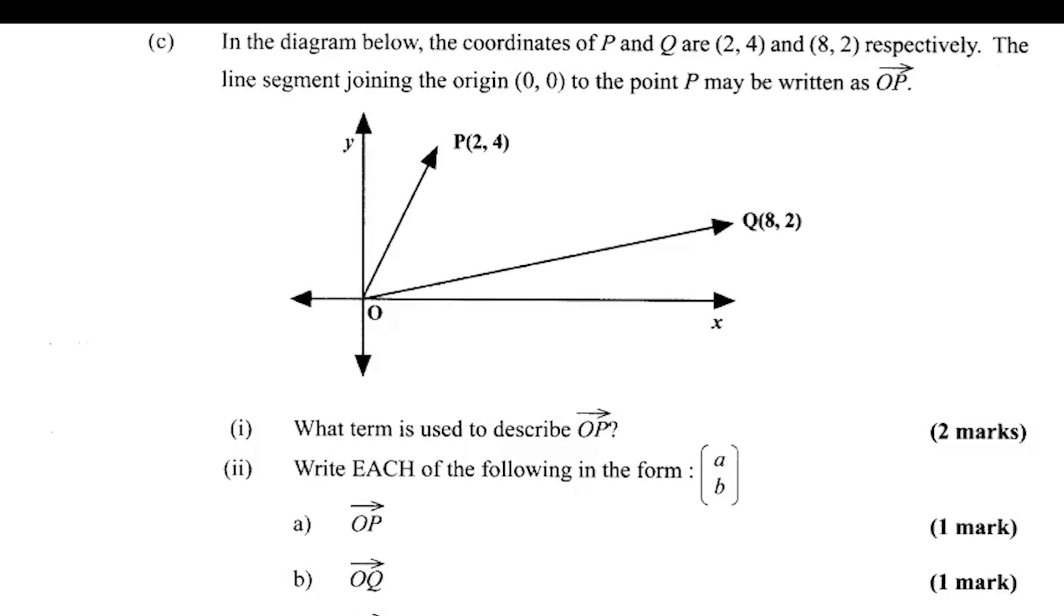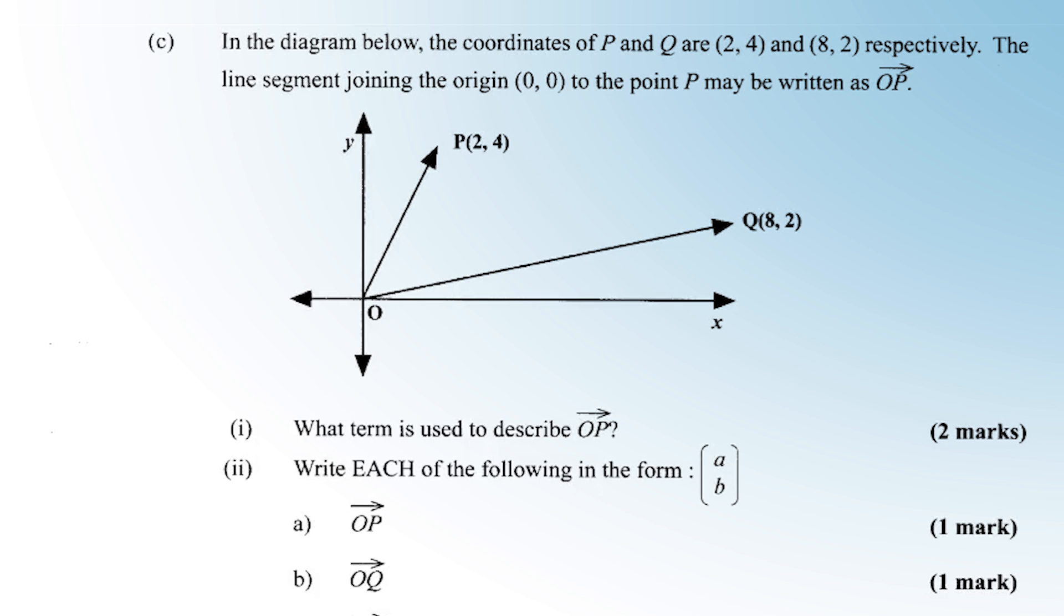Alright, so let's look at this past paper, May 2014. This is a nice one. In the diagram below, the coordinates of P and Q are (2, 4) and (8, 2) respectively. They're telling us that the line segment joining the origin (0, 0) to the point P may be written as OP. So what term is used to describe OP?